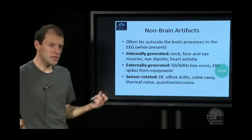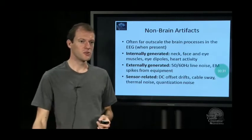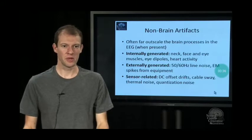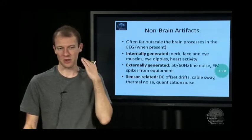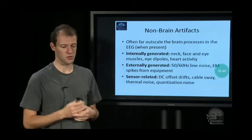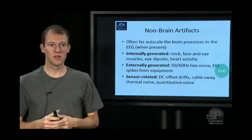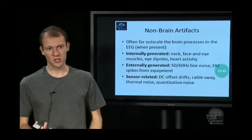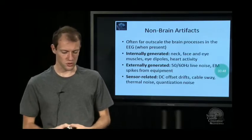We distinguish between different classes. There's internally generated artifacts which come from muscles. Neck muscles are really the dominant ones, but also face muscles like blinks and so on. There's other things like heart activity which is an artifact source, but not as strong.